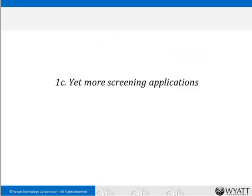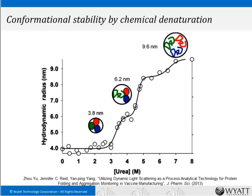Additional screening applications with the DLS plate reader include conformational stability by chemical denaturation, where you titrate different amounts of urea and look at unfolding as a function of denaturant concentration. In this example from the literature, a protein unfolded in multiple stages — multiple domains each with their own unfolding point — and from this you can extract ΔG, the free energy of unfolding. This provides another good measure of conformational stability.